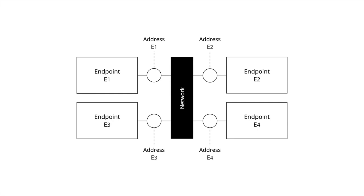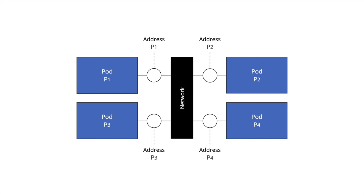Moving towards the Kubernetes network model: in Kubernetes, network addressable endpoints are pods. The Kubernetes network model specifies that any pod can communicate with all pods without network address translation. The Kubernetes network model does not specify whether external endpoints can or cannot communicate with pods. As a consequence, depending on your cluster, network ingress may be trivial or complex to implement.